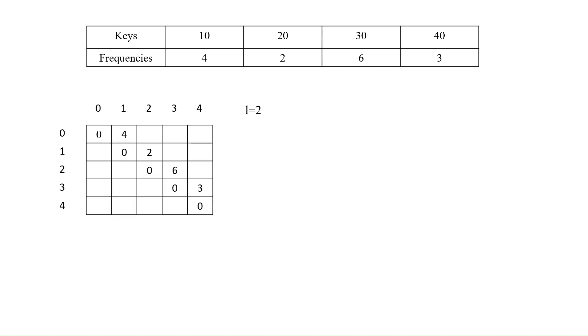Now, at length L is equal to 2, it indicates number of keys to be selected are 2 and J minus I is equal to L. Let us consider keys 10 and 20, the possible trees for 10 and 20 keys are here and maximum searching capacity for those keys are 8 and 10. Such that minimum of those are 8 such that the values at 0 comma 2 is 8 with root 10 that is first key.